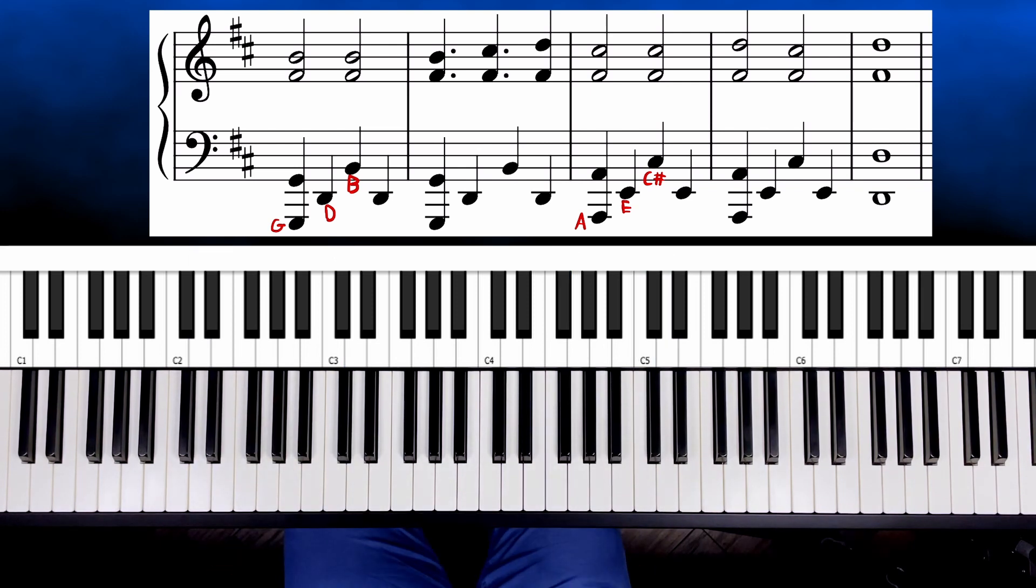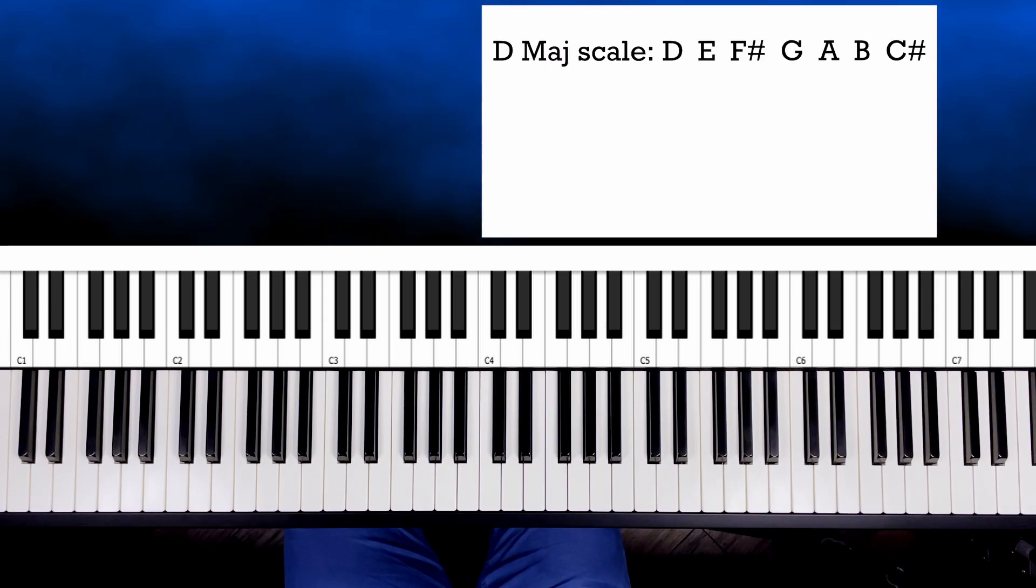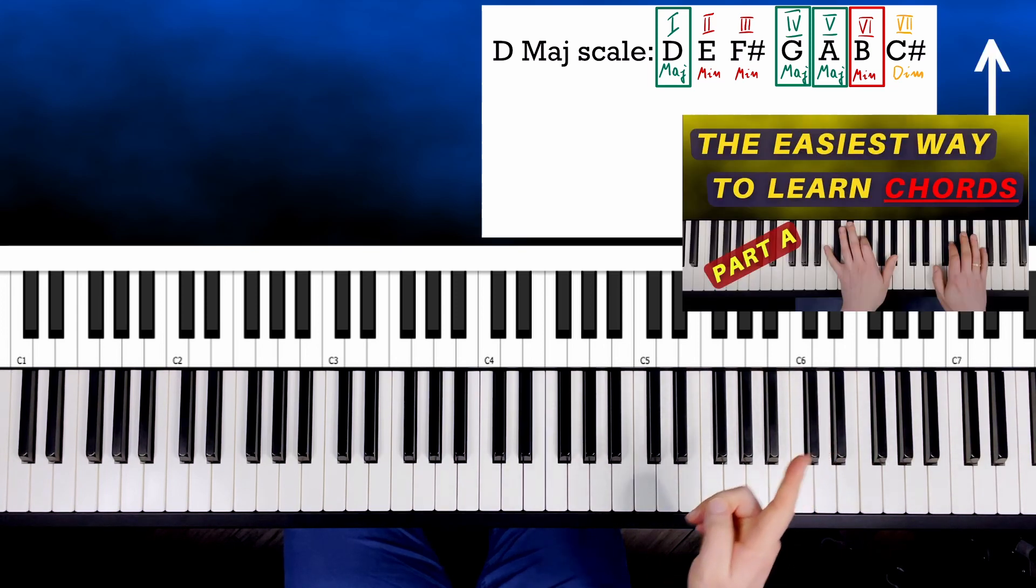And now the last exercise. This time I will use arpeggio. To build an arpeggio, I will use notes that build a chord. You can build a chord on every step of the major scale. So on the first, fourth and fifth step you have a major chord. On second, third and sixth minor chord, and on seventh step diminished chord. The progression I used is one, six, four, five, which means I will have D major, B minor, G major and A major. If you want to learn more about chords and how to build them, check out this video.